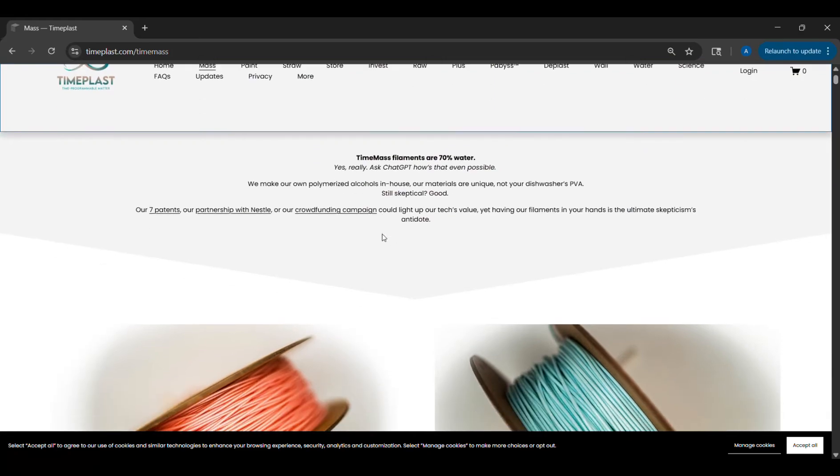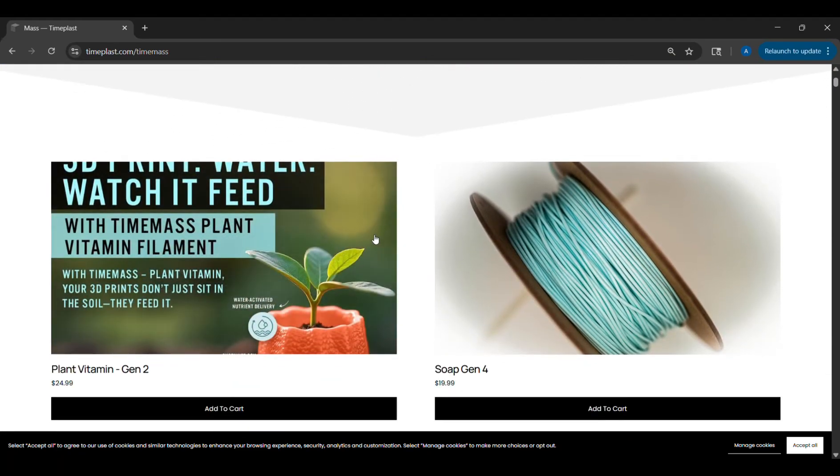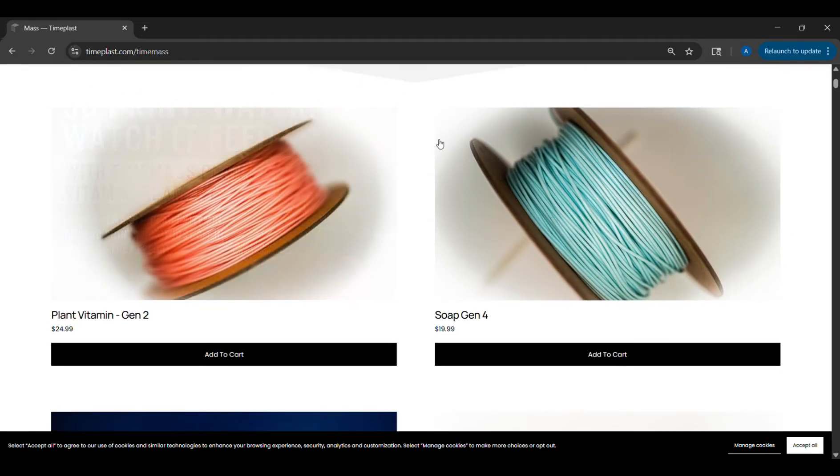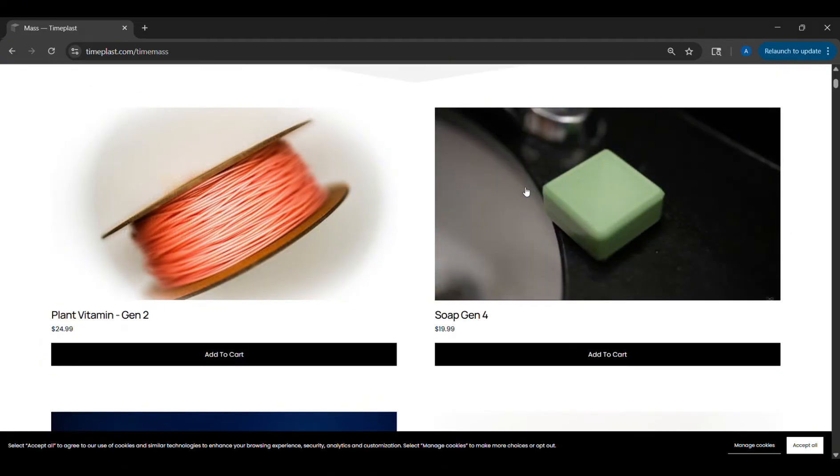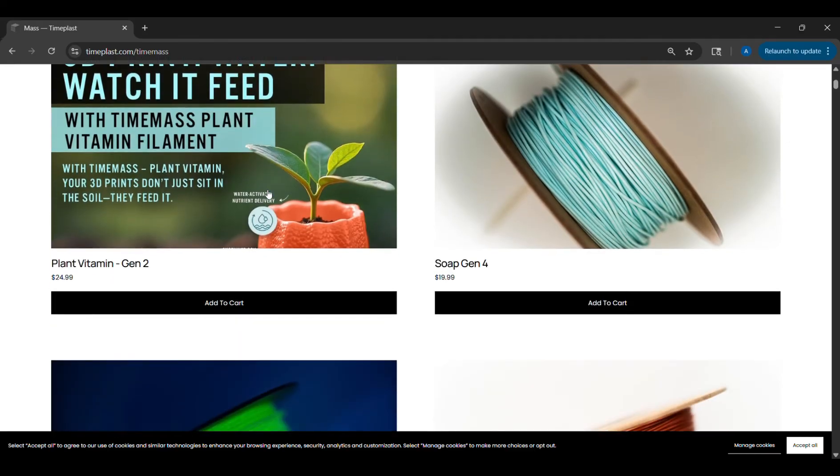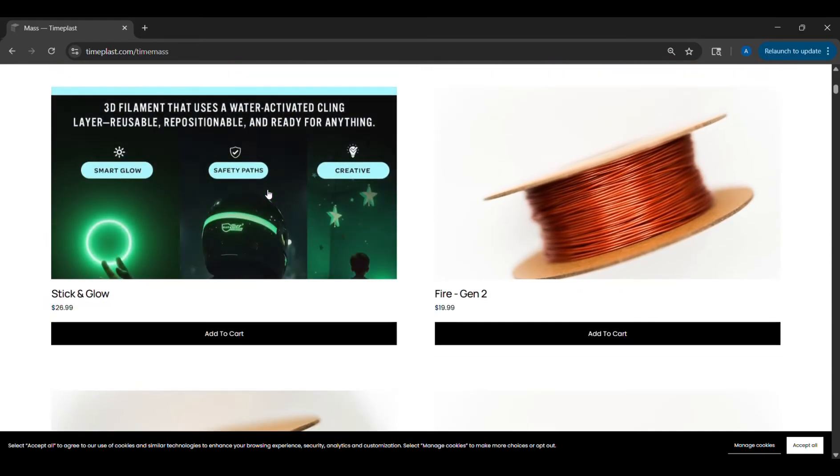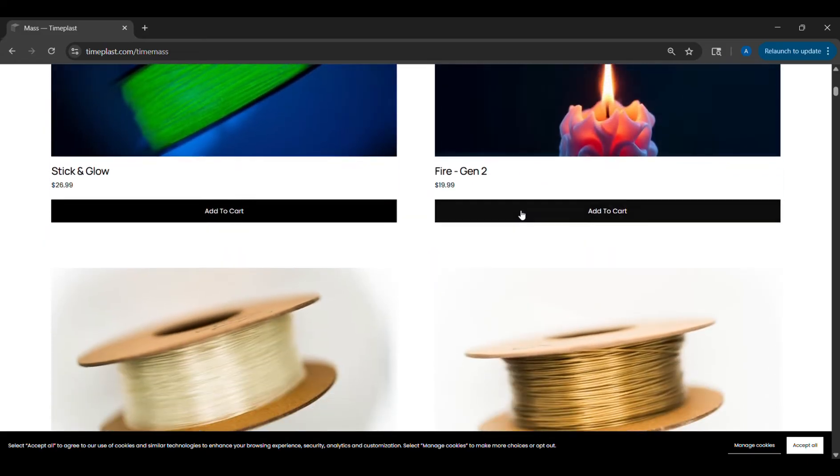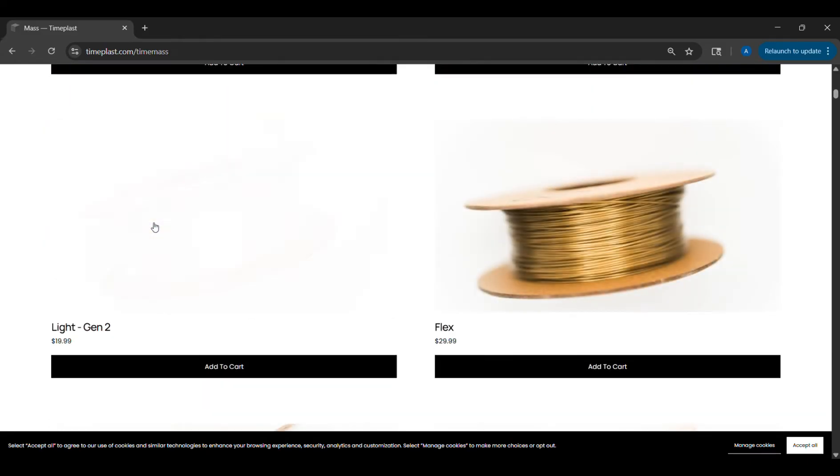So this is TimePlast's filament website section. They have a variety of different filaments and I purchased a few of these, but they have one that is a 3D printed soap, one that's for plant and vitamin nutrients, stick and glow. They've got a variety of different filaments, but today we'll be talking about this light filament. So let's take a look at that.